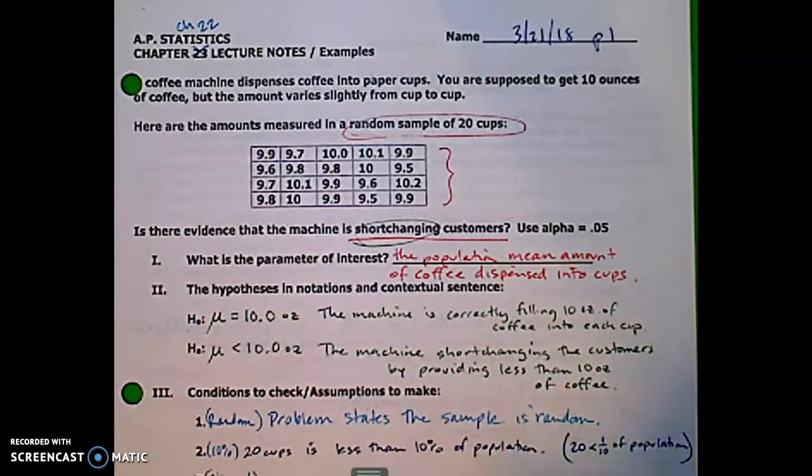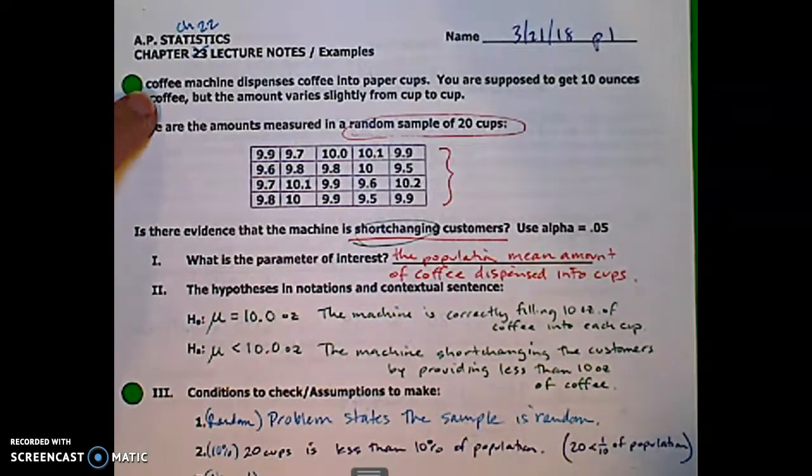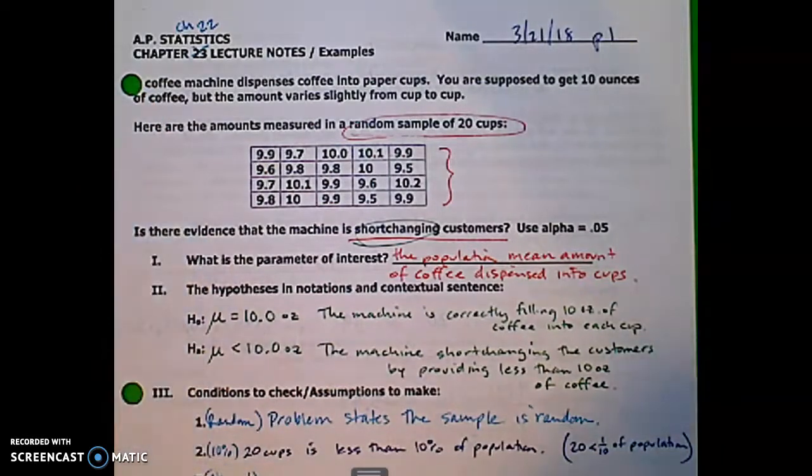Hi STAT students. Hope everything is going well. In this video I'm going to step through the example in chapter 22 notes for the coffee machine dispenser problem. The notes are already all written from a prior year. That's available to you to either print out or to copy down your own set of notes. The video will explain the steps of the notes.